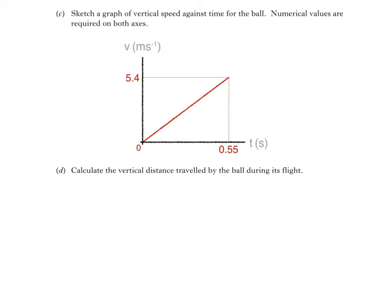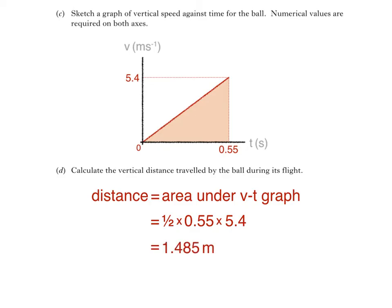Remember that the graph is of the ball's vertical speed against time, and that distance is equal to the area under a speed-time graph. So, the vertical distance travelled by the ball can be found by calculating this area. Since it's a triangle, we can calculate the area by multiplying half times the base times the height. That gives us half times 0.55 times 5.4, which is 1.485 metres, or 1.5 metres to two significant figures.